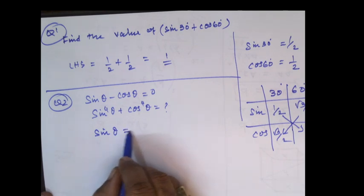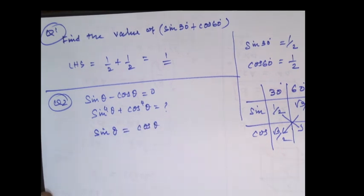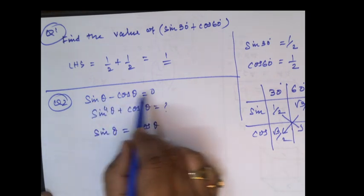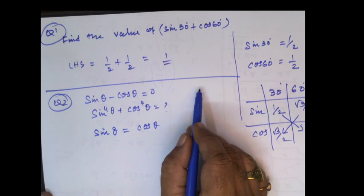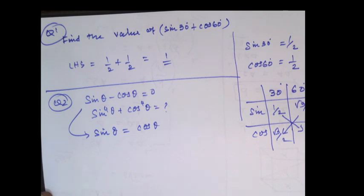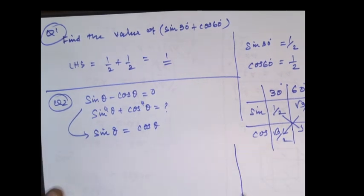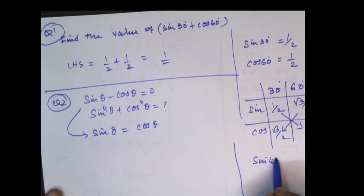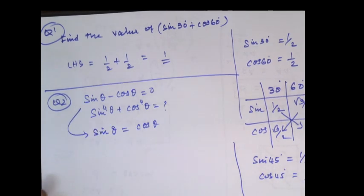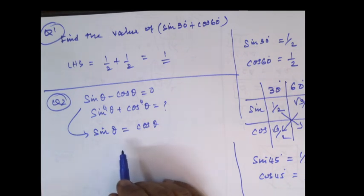Sine theta is equal to cos theta. Why? Sine theta minus cos theta is 0, so minus cos theta can be brought to the other side, giving sine theta equal to cos theta. In which value are both of them equal? 45 degrees. We know that sine 45 degree is equal to 1 by root 2, and cos 45 degree is equal to 1 by root 2. Therefore theta should be 1 by root 2.